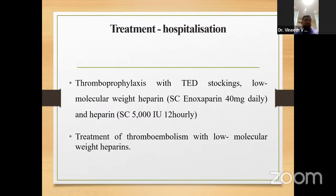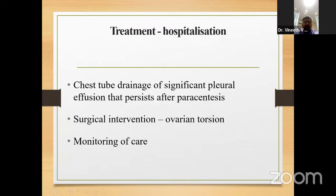Thromboprophylaxis should include TED stockings — thromboembolus deterrent stockings — and low-molecular-weight heparin. Ideally, subcutaneous heparin 40 mg daily, or heparin 5,000 international units twice daily can be used. Treatment of thromboembolism should be done with low-molecular-weight heparin. Chest tube drainage is indicated for significant pleural effusion, and surgical intervention for ovarian torsion.